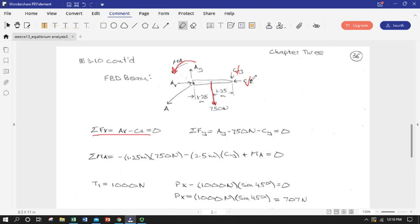Let's write our equations of equilibrium from the beam. In the X direction, we have C sub X and A sub X opposing one another. And in the Y direction, we have A sub Y going up and then both C sub Y and our 750 Newtons going down.